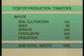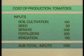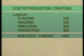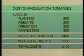Information that needs to be gathered includes the cost of soil cultivation, seeds, sprays, fertilisers and irrigation. Next, the labour costs for planting, weeding, irrigation and harvesting must be calculated and the input costs added on.